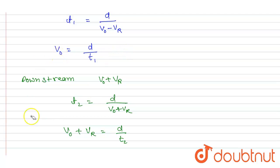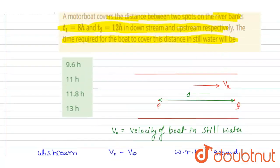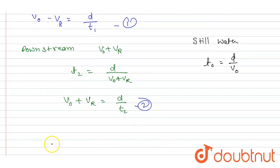And here I can write v₀ + vᵣ equals d/t₂. So if you see, this is v₀ - vᵣ and this is v₀ + vᵣ. And what we want, we want in still water. So in still water, it will take t₀ time, that will be simply d/v₀. So if you see here, if you add the two expressions, you know that t₁ and t₂ are 8 and 12.